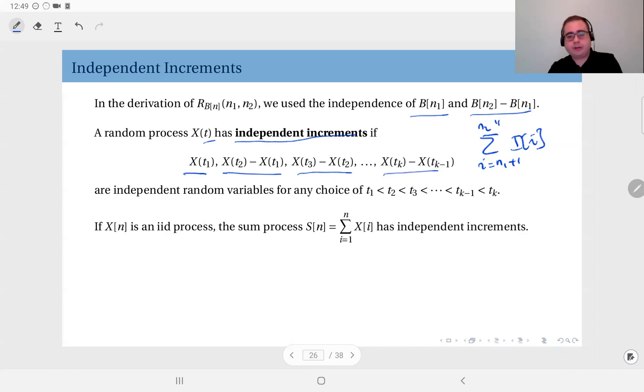All of these, well these are increments. This is the increment from 0 to t1, assuming that X(0) is 0. This is the increment from t1 to t2. This is the increment from t2 to t3. Assuming that of course t1 less than t2 less than t3 less than t4, etc., up to tk.